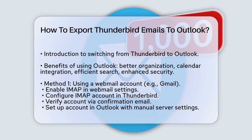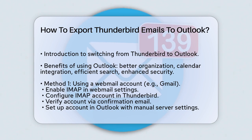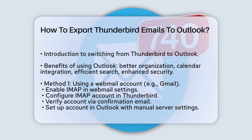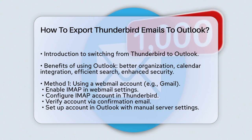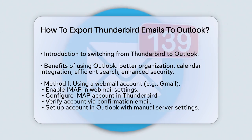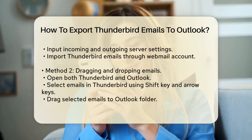Using a webmail account. One method involves using a web-based email service like Gmail as an intermediary. Here's what you need to do: log into your webmail account and enable IMAP in the settings, then configure your IMAP account in Thunderbird by adding your webmail account details. Verify the account by opening the confirmation email.